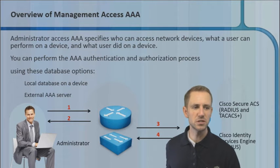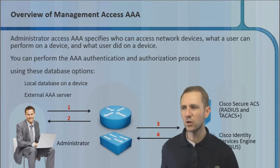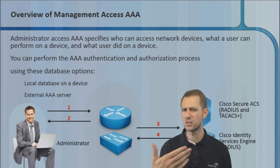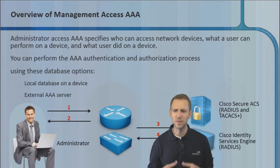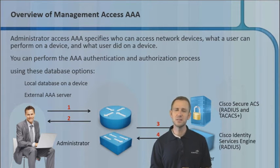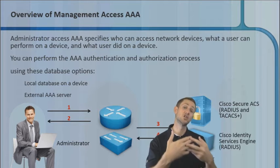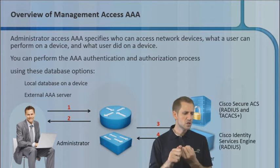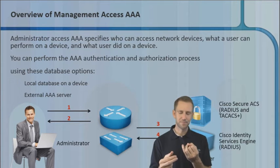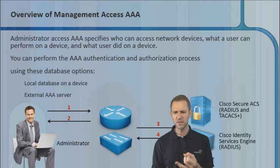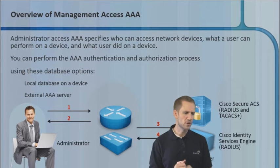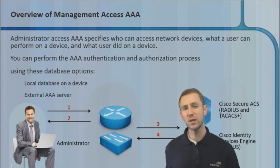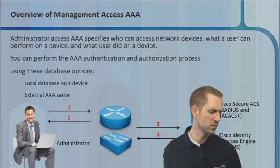Todd mentioned security groups, which are something we can use — security group ACLs made available with ISE — and that's more of an authorization response. On the authorization response side: security groups, dynamic VLAN assignment, dynamic ACL, and whether or not we're going to do web redirect. But more specifically, I was asking about what types of things do we consider.